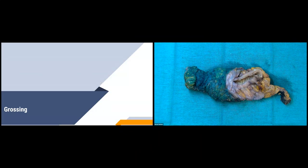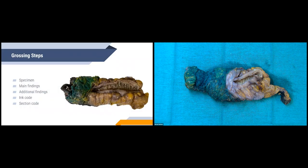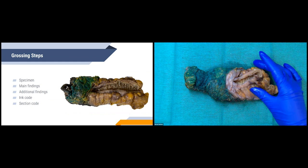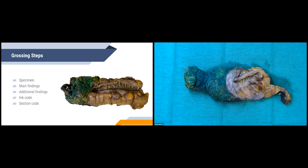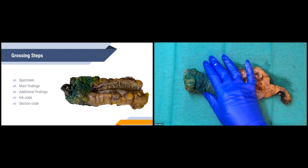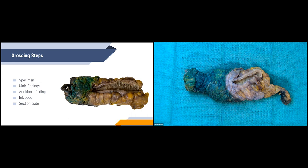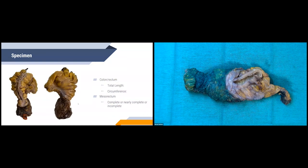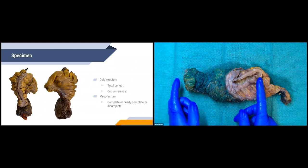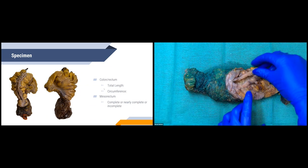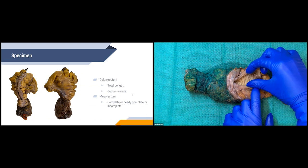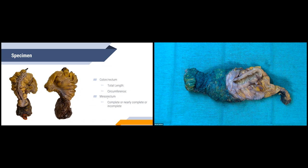Now we'll go through our grossing steps. Before starting, we wait at least 48 hours after freshing to allow the specimen to fix properly so it's solid during grossing. Our grossing steps are: identify the specimen, discuss main findings, additional findings, ink code, and section code. We start by describing the specimen with total length of the colon and rectum, circumference, and assessment of the mesorectum — whether it's complete, nearly complete, or incomplete.